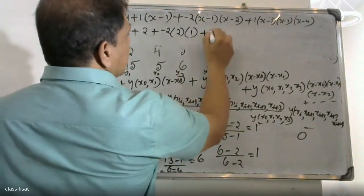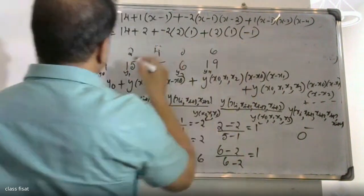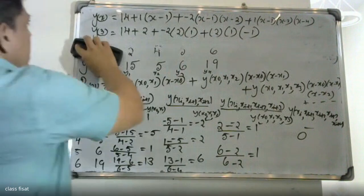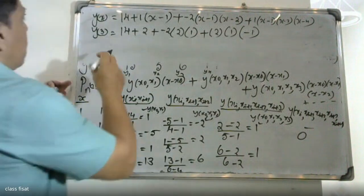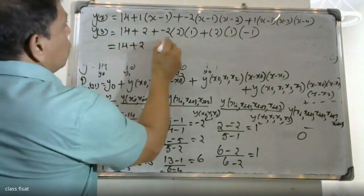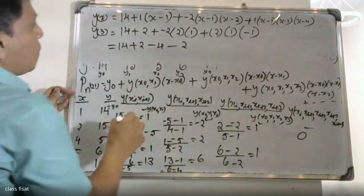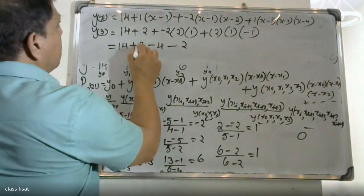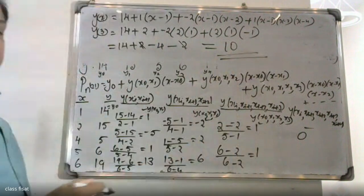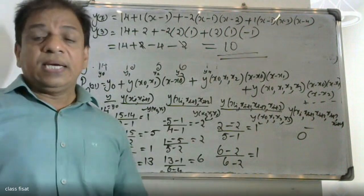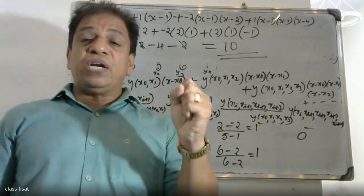To calculate the value at x=3: substituting x=3, we get (3 minus 1), (3 minus 2), (3 minus 1)(3 minus 4), (3 minus 1). Computing: 4 plus 4 minus 4 minus 2, giving us the value of F(3). This is the final calculated value.